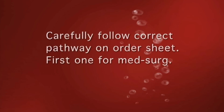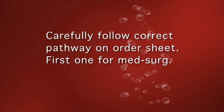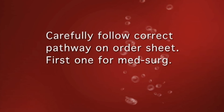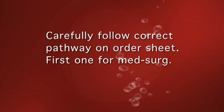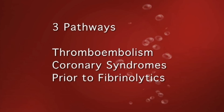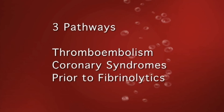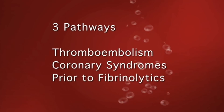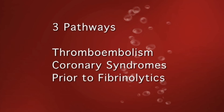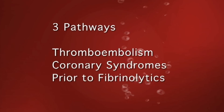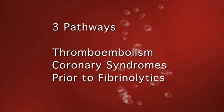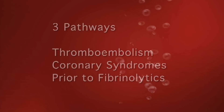The protocol order sheet has three separate pathways, and it is extremely important that you use the proper one. The first is used by MedSurg — it is the protocol for venous thromboembolism. The second is for coronary syndromes such as unstable angina and may need telemetry monitoring. The third is for patients that will be receiving fibrolytic therapies, again requiring monitoring.